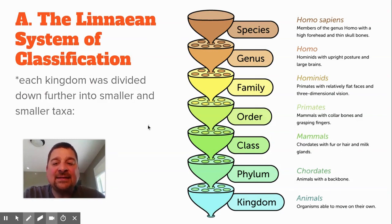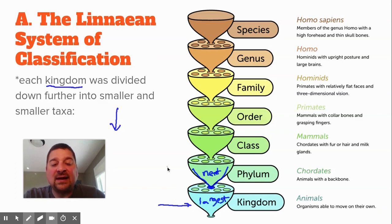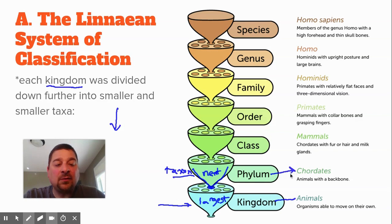When we look at the Linnaean system as we use it today, you start with the biggest taxon, which is kingdom. In your notes it goes from top down. This graphic here is showing the largest one, kingdom, down at the bottom, so you see kingdom includes all of these smaller groups. If we look at how humans are classified, we're in kingdom Animalia — all the organisms that can move around on their own. Then we are broken down into a smaller group of chordates, or animals that have backbones.